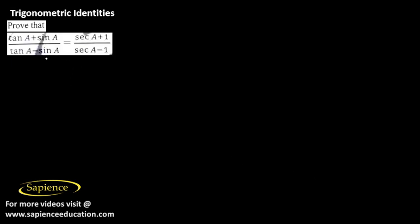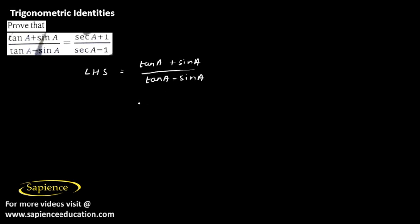Now in this question we need to prove that (tan A plus sine A) divided by (tan A minus sine A) is equal to (secant A plus 1) divided by (secant A minus 1). The left hand side is (tan A plus sine A) divided by (tan A minus sine A).